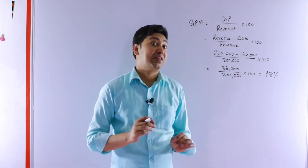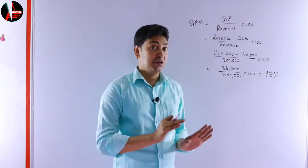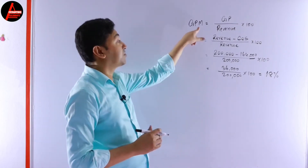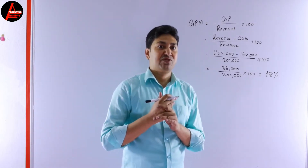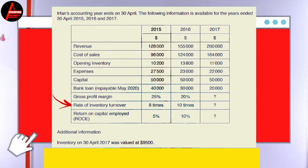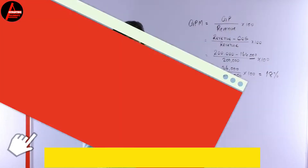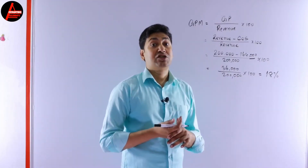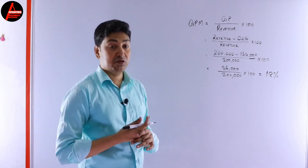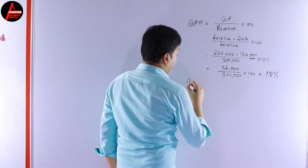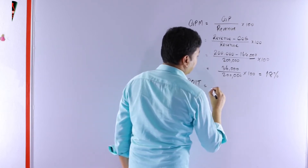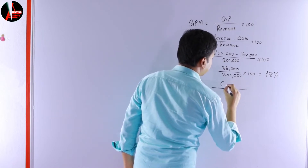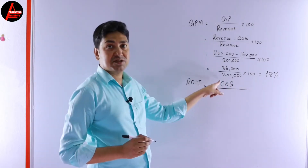This is a common exam question, and that is the way to calculate gross profit margin. So the first one is done. Next is the rate of inventory turnover, which is also very important. The formula is: rate of inventory turnover equals cost of sales divided by opening inventory plus closing inventory.